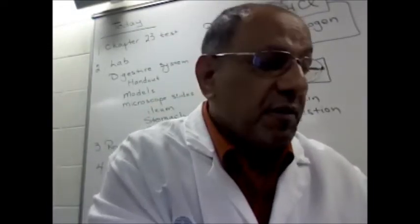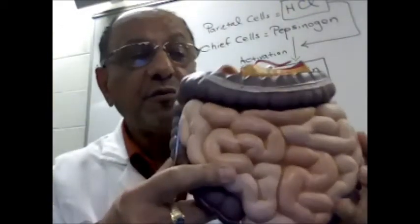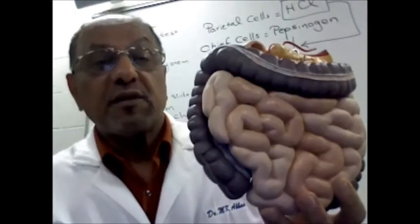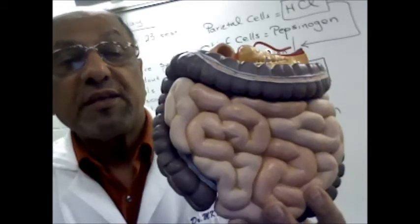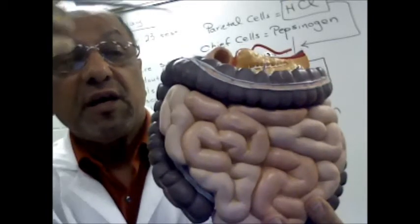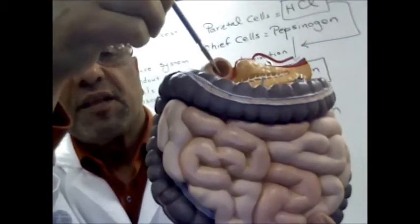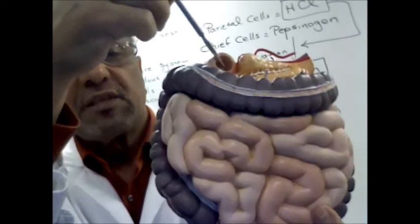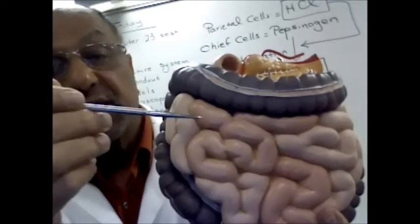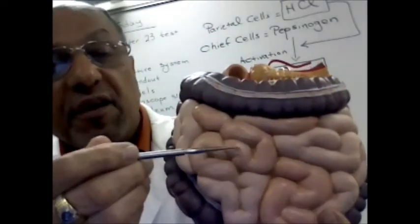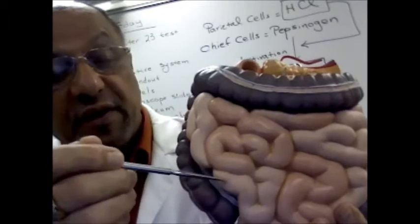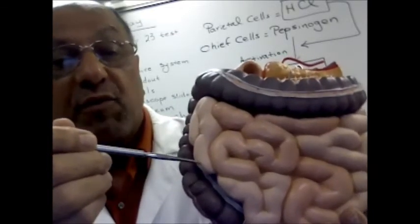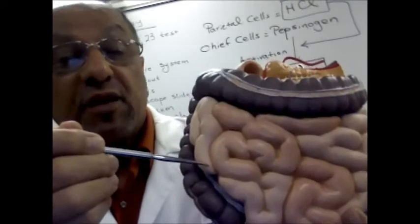Next we're going to look at what the stomach connects to, which is the small intestine. The small intestines on the model are shown in the lighter color. The first part of the small intestine is the duodenum. The duodenum will lead to the jejunum, which is shown in the darker area here.